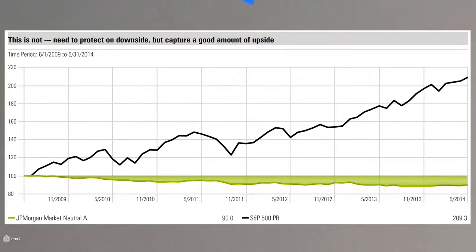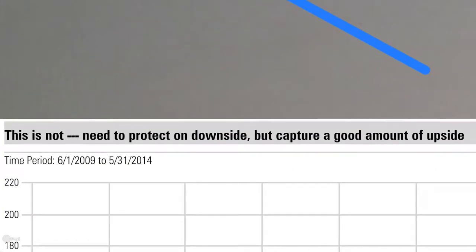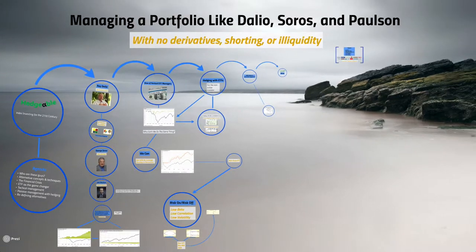Conversely, this chart is what alternatives shouldn't look like. This is a JP Morgan market neutral mutual fund product from the point of the market recovery in 2009 until the end of May 2014. What if you as an investor, because this asset class is labeled alternative, allocated a piece of your portfolio to it, hoping to receive alternative benefits? The market doubles, but then your JP Morgan fund received none of the upside. To be labeled alternative, you need to protect on the downside but capture some upside.